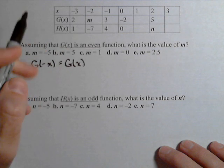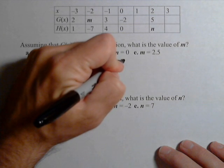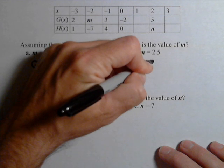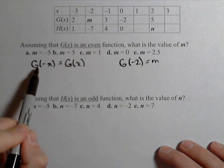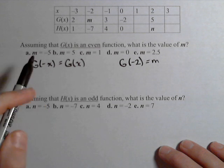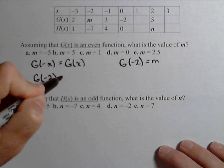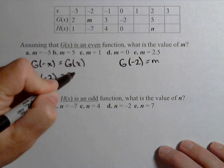Now m is equal to g of negative two. So g of negative two equals m. Look at what this definition says: g of negative x equals g of x. So g of negative two equals g of two,